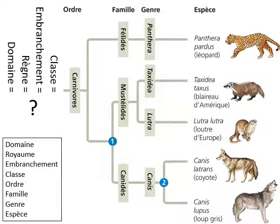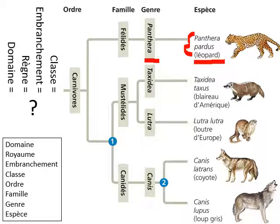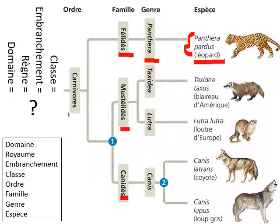Here is another way to visualize the taxonomic hierarchy. Here again we see the species leopard — this is the species name. Here is the genus. It's in the family Felidae, which includes cats — big cats and little cats, domestic cats and wild cats. This family is one of several families in the order Carnivora.